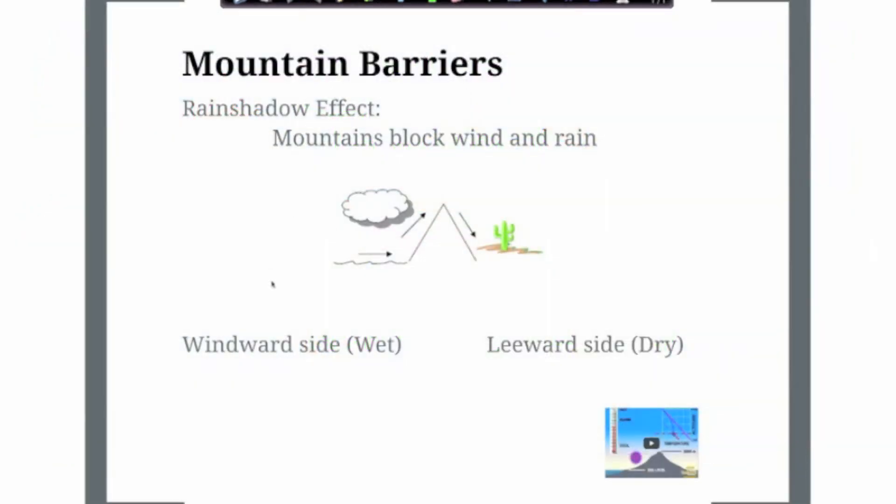Okay, mountain barriers. We talked about mountain barriers and the Pacific Northwest in the United States. That's where we see this occurring a lot, although it's not the only place. This is the place we're probably most familiar with. So basically what happens here, this is the ocean, right? And if you have wind coming off the ocean, it's going to carry moisture.